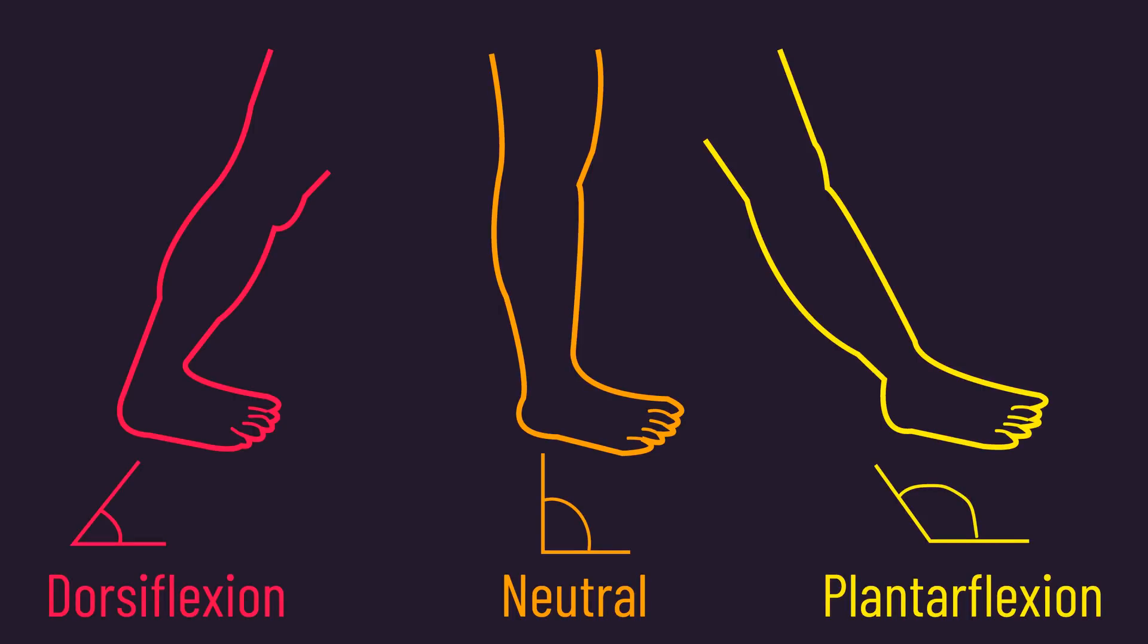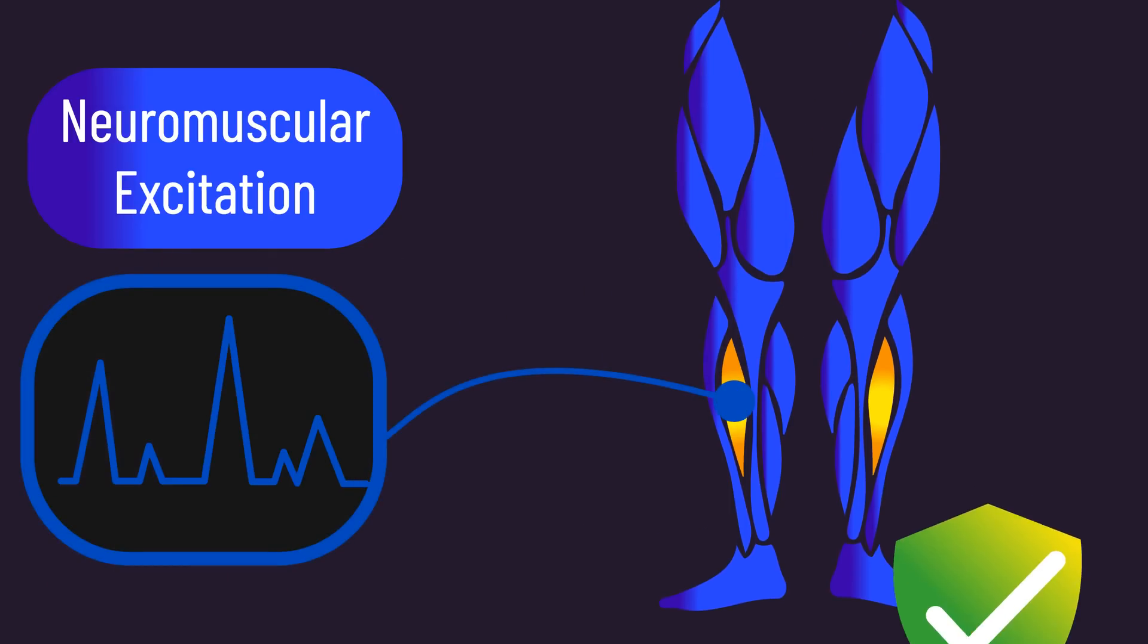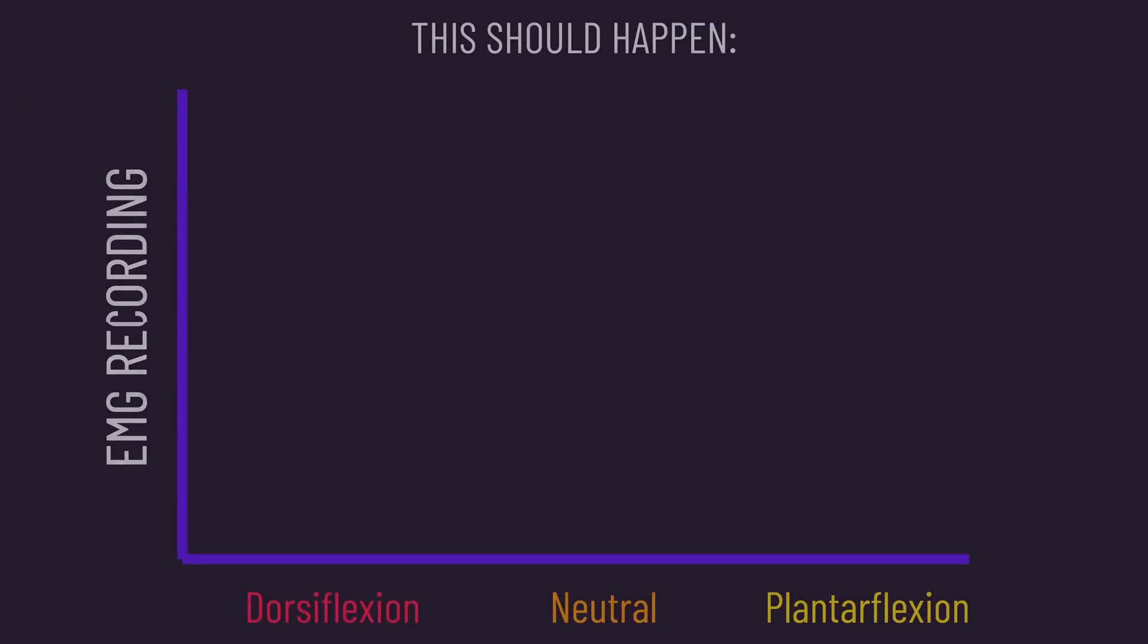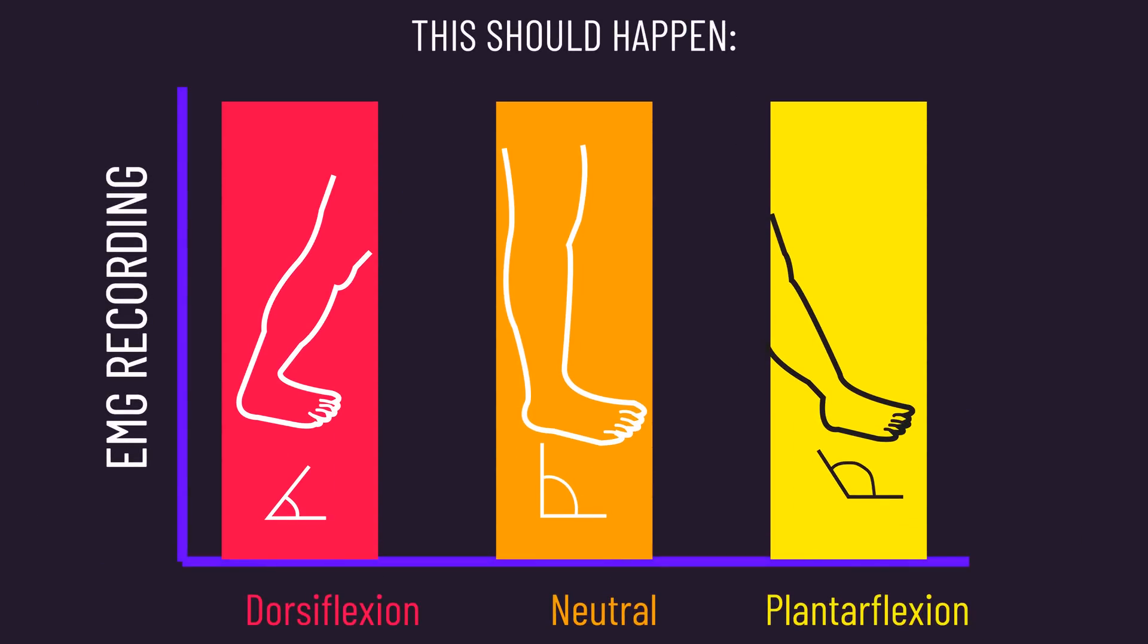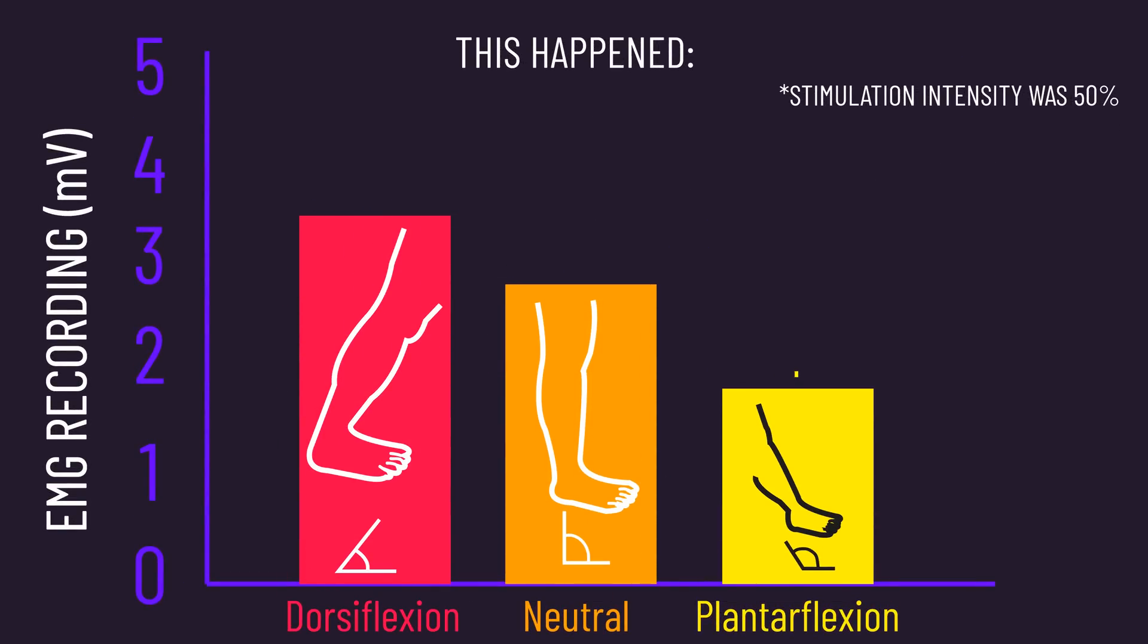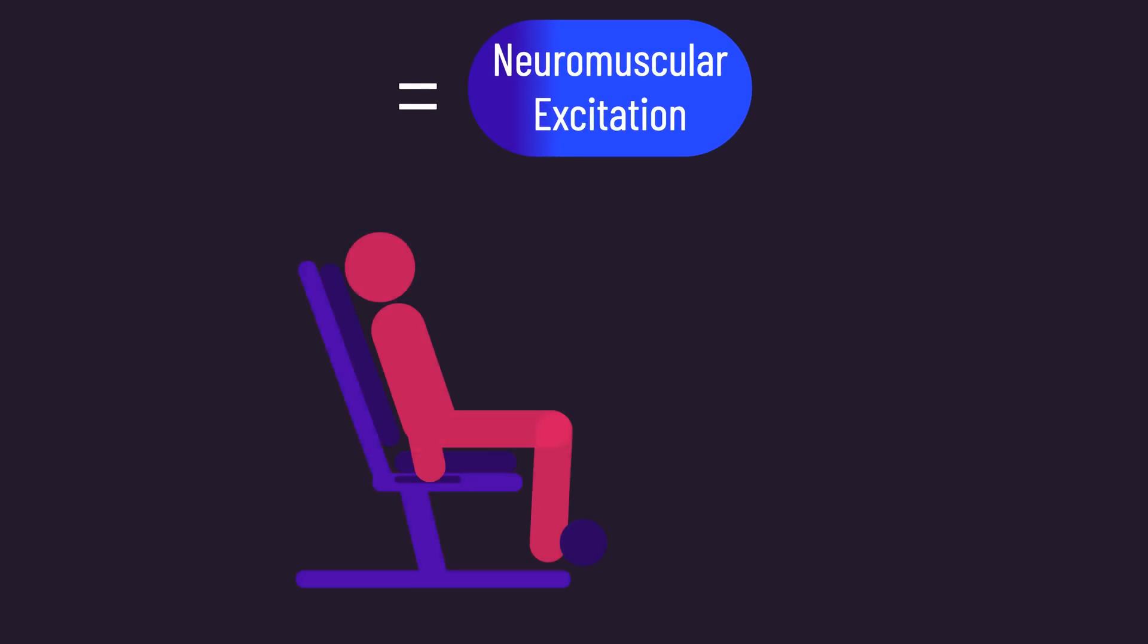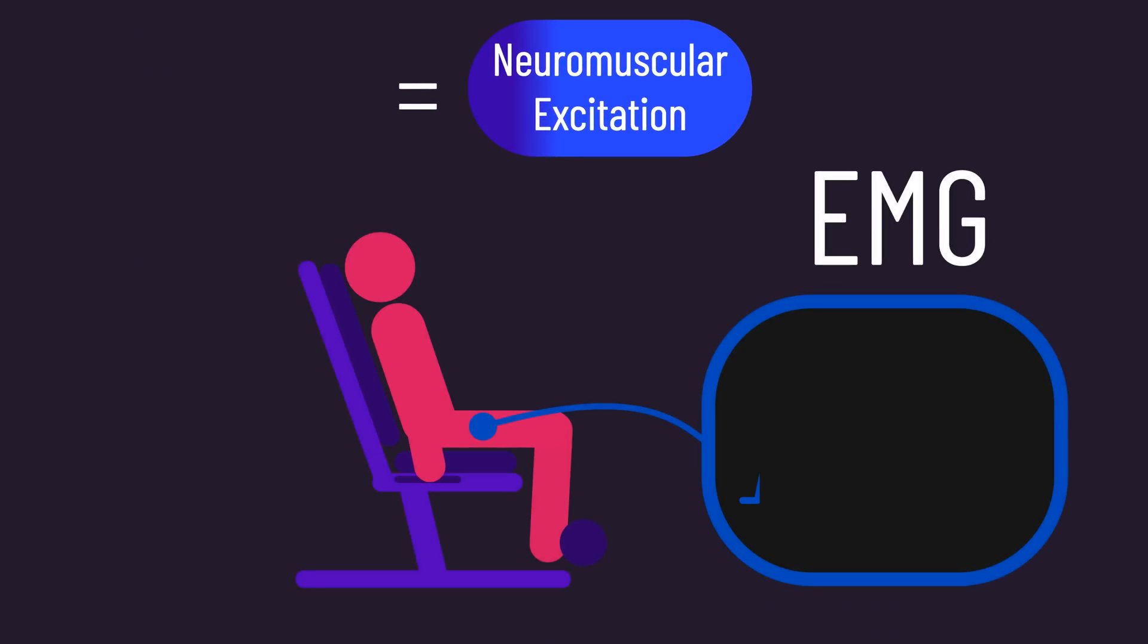actual neuromuscular excitation would have been the same at all three foot angles. If EMG reliably measured neuromuscular excitation, it should find the same amplitude across the three different foot angles. But this did not happen. The EMG recording showed different amplitudes at each three different foot angles. So this study demonstrates even if actual neuromuscular excitation is the same, simply changing angles can produce different EMG recordings.